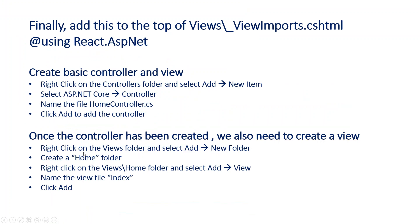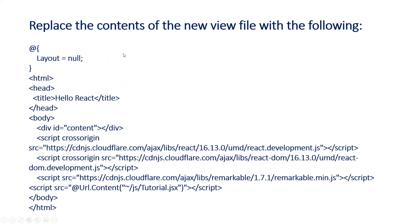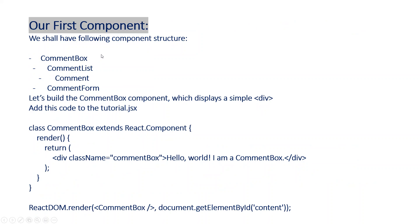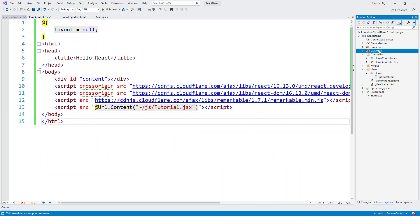Now I'll create a component. The structure is: CommentBox at the top level, with CommentList as a child component, and Comment as a child of CommentList. CommentForm is also a child of CommentBox at the same level as CommentList. React is all about modular, composable components, and I'll put the CommentBox markup within tutorial.jsx.